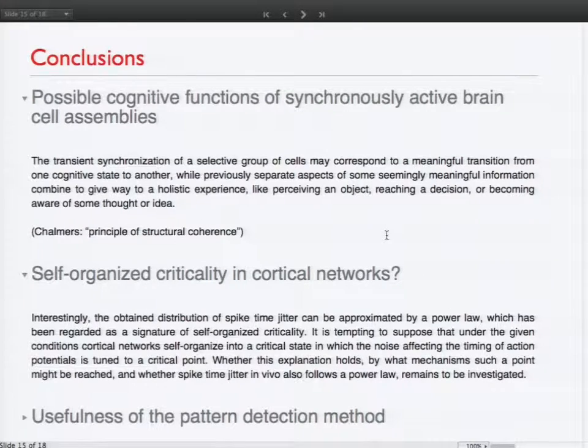Another interesting aspect is this power law that I was talking about. So the obtained distribution of spike time jitter seems to follow a power law which has been regarded as a signature of self-organized criticality. And now it's, of course, tempting to suppose that under the given conditions cortical networks self-organize into a critical state in which the noise affecting the timing of action potentials is tuned to a critical point. This is only speculation, but it looks promising. Whether this explanation holds by what mechanisms such a point might be reached and whether spike time jitter in vivo, this was done in vitro from brain slices, also follows a power law remains to be investigated, of course. And I'd like really to stress this point and to point this out, that this pattern detection method can, of course, be applied to any other data, like, for example, fMRI data, just by adapting the parameters and the temporal scales. So it's open to any sort of data.